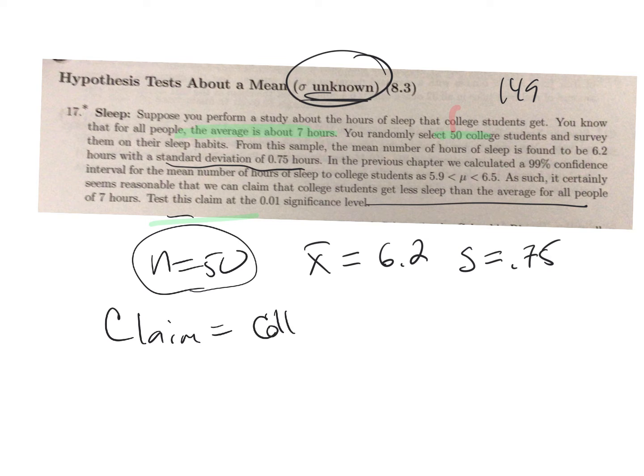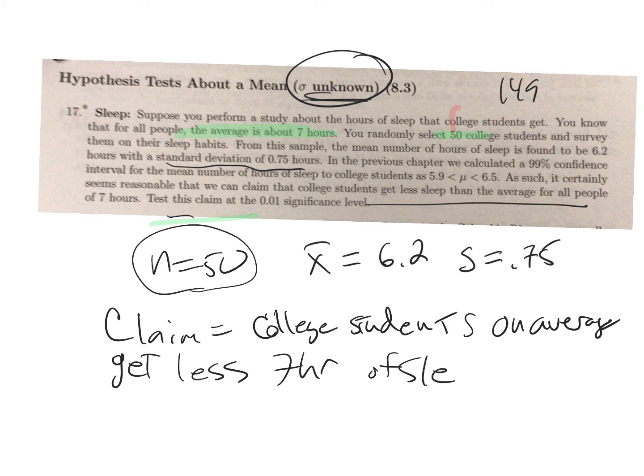I think it's good to write it out in words, this helps you phrase the answer correctly. Some people just say mu is less than seven, that's okay, but this is better: college students get less on average, get less than seven hours of sleep.